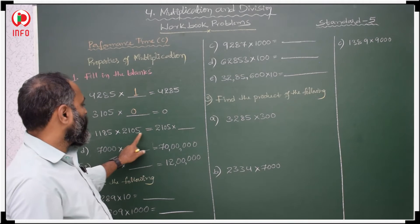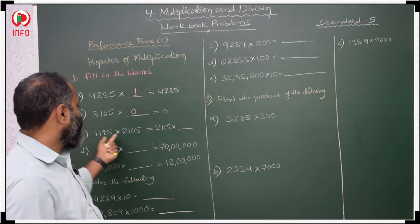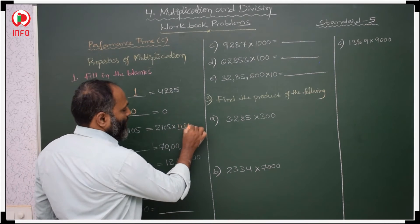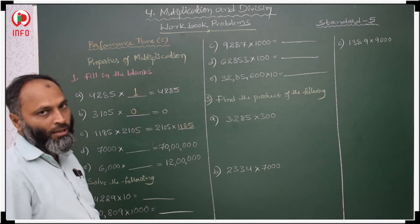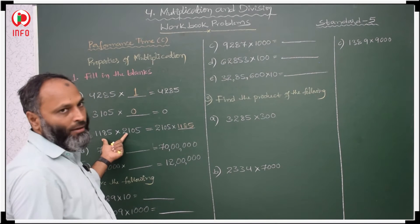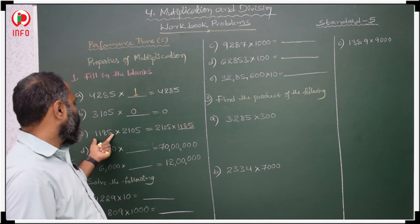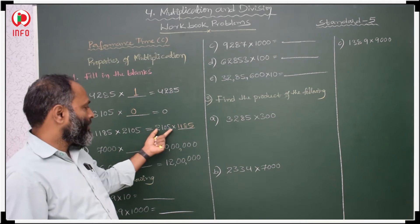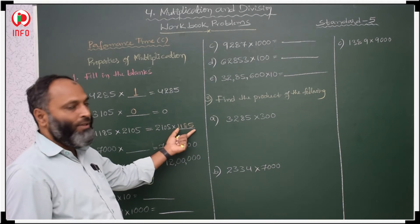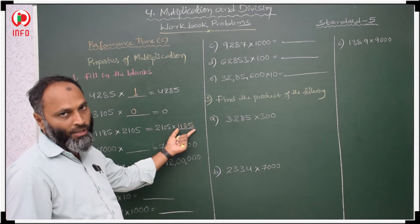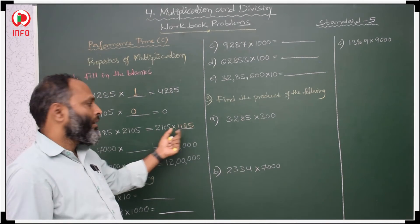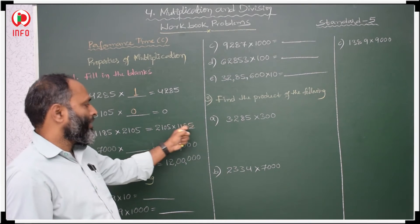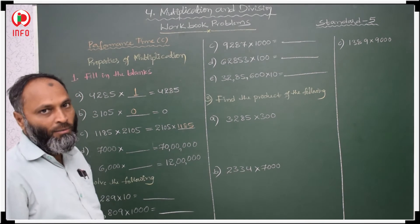Here 2105 is there, and we have to get 1105. We are changing the order of the multiplicands. First 1085 is there, then 2105 is there. We have to write here 1185. Here the first multiplicand and the second multiplicand swap — second multiplicand becomes first. The order of the multiplicands will change.